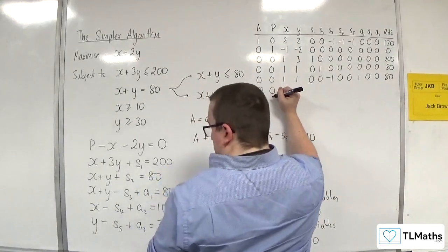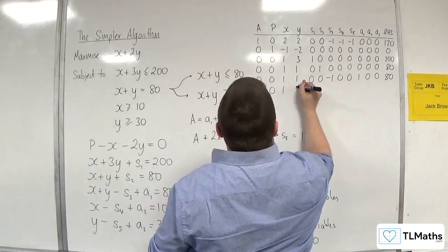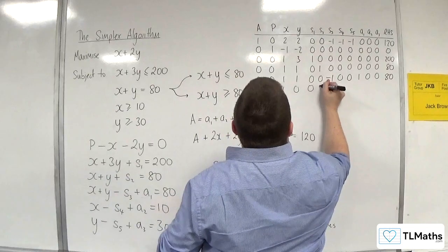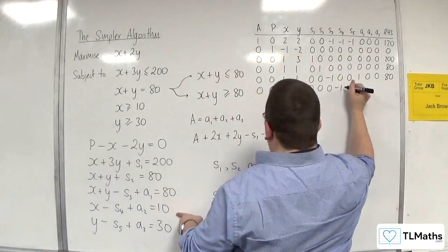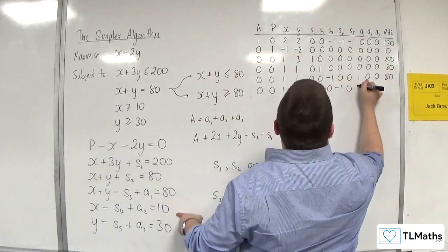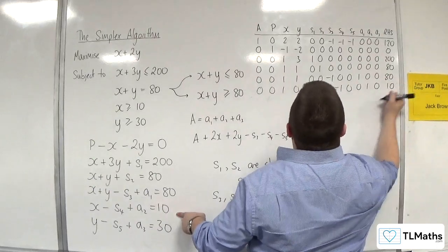For the x plus y less than or equal to 80 row: 0, 0, 1, 1, 1, 0, 0, 0, 0, 0, 0, 0. Right-hand side is 80. For the x greater than or equal to 10 row: 0, 0, 1, 0, 0, 0, 0, minus 1, 0, 0, 1, 0. Right-hand side is 10.